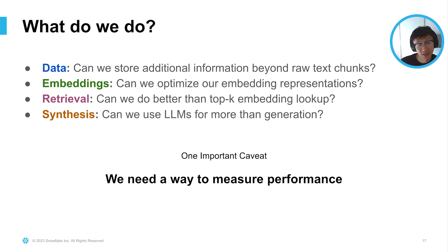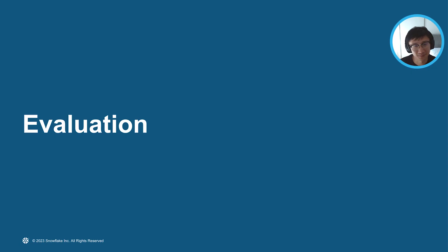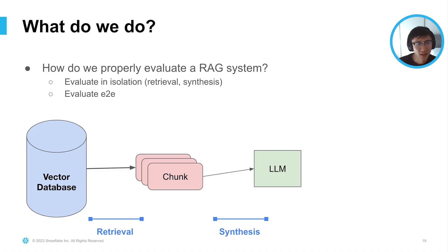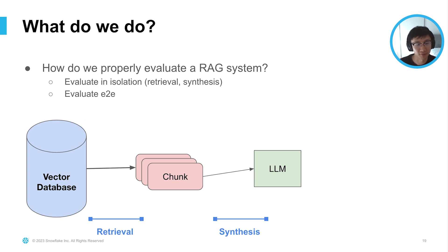We need a way to actually measure performance. Before you try a bunch of things to improve RAG, you need to quantitatively and qualitatively measure how well your pipeline is doing. Let's do a brief segue into evaluation. We can evaluate in isolation — evaluating retrieval as well as synthesis on their own — or we can evaluate end-to-end the generation performance, where you take in a user query, look at the final predicted response, and try to understand the quality of that.